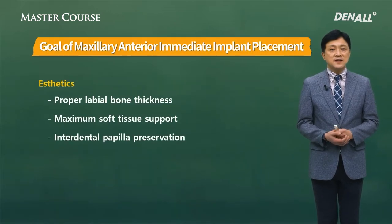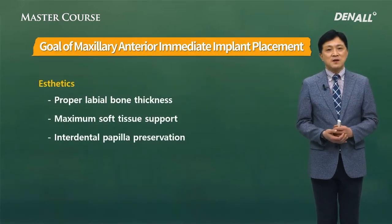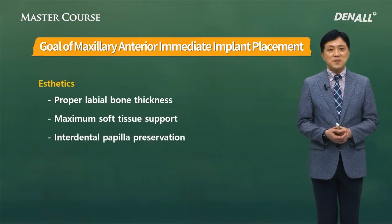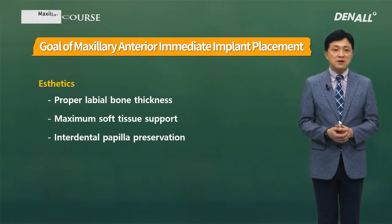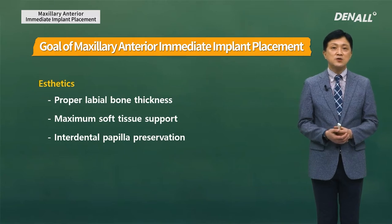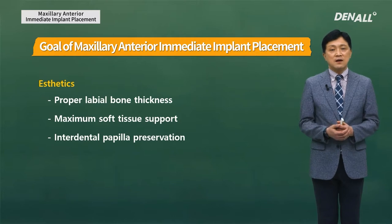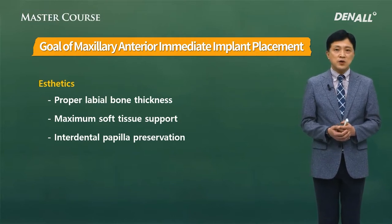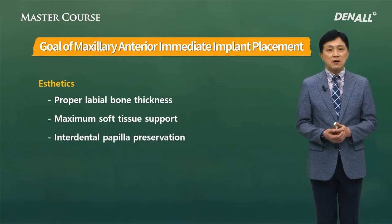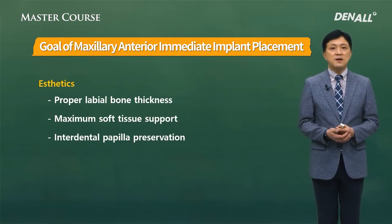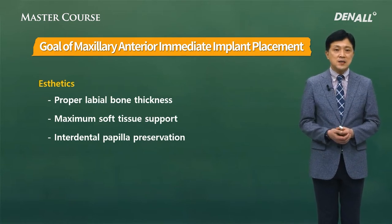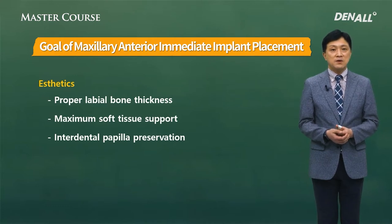The goal of placing an implant in the maxillary anterior region immediately after extraction is to ensure aesthetics. In order to ensure aesthetics, we need to ensure proper labial bone thickness and maximum soft tissue support. Interdental papilla needs to be preserved and healed. These three factors are needed for an aesthetic outcome.